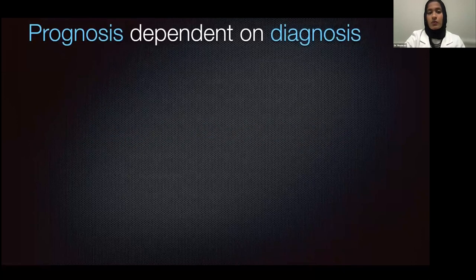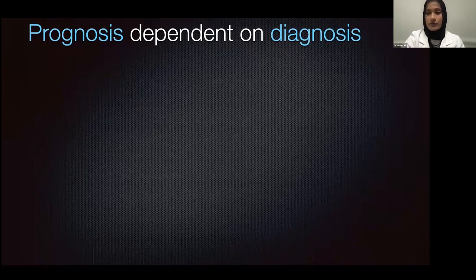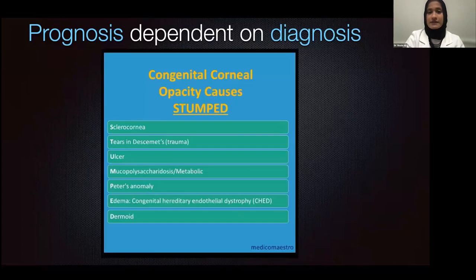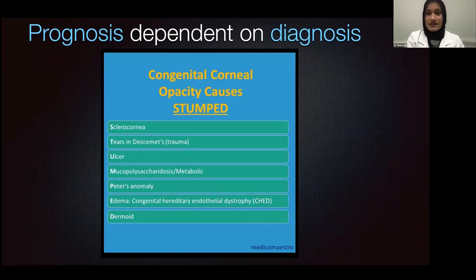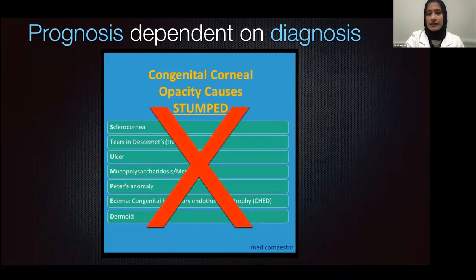When we look at preoperative considerations, what we need to really determine is the diagnosis — that is one of the most important parts for pediatric corneal transplant. Every scar, every opacity is not the same. The commonly taught old-school method uses the mnemonic 'STUMPED,' but this doesn't really look at the etiology or the cause for why this patient was born with a corneal opacity. Old terms like sclerocornea and Peter's anomaly are really not even used anymore. What we need to be actually looking at is the etiology of where this corneal opacity is coming from.